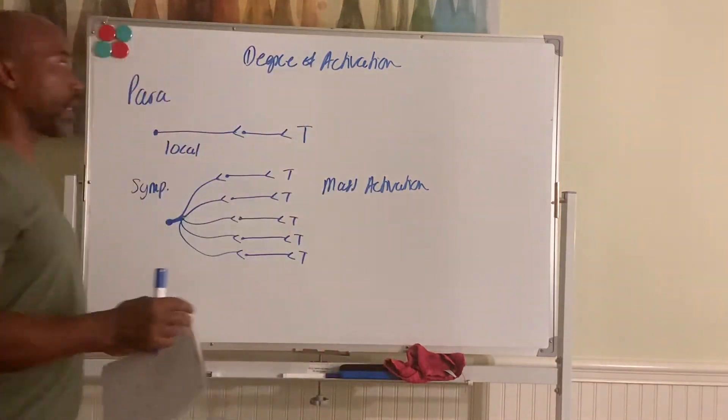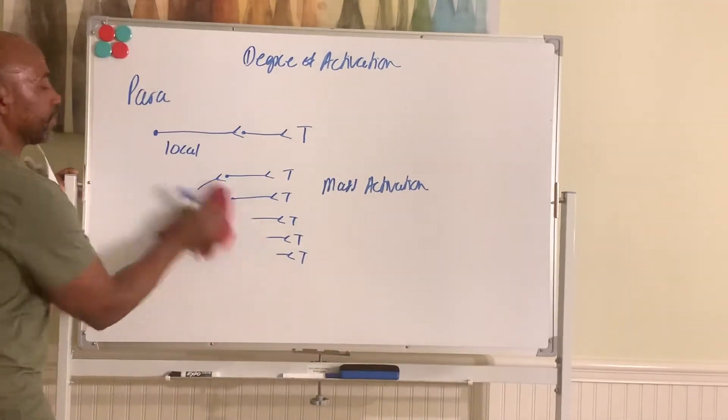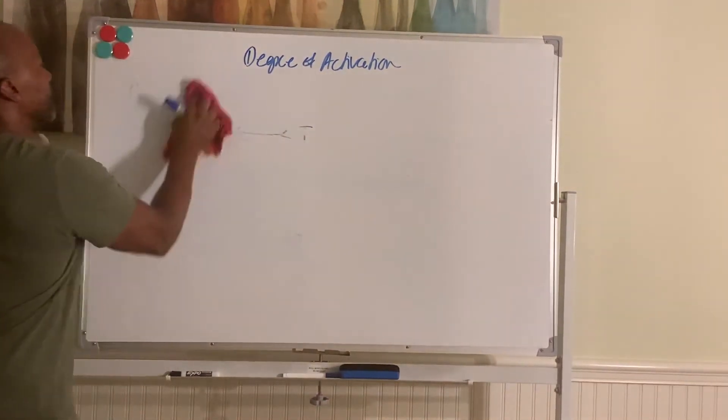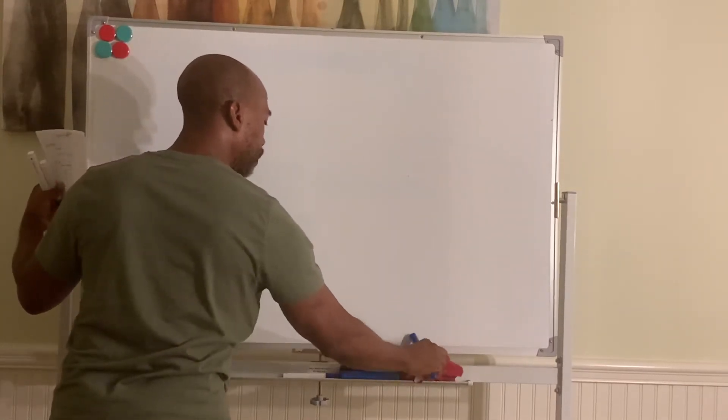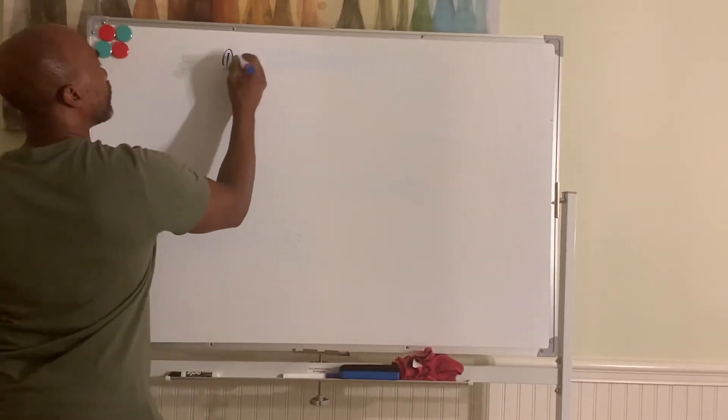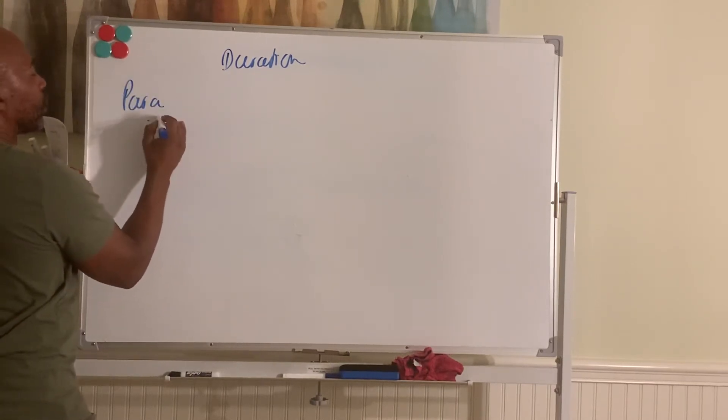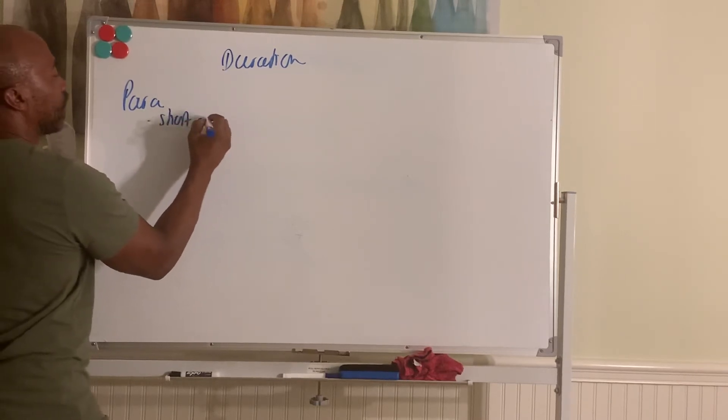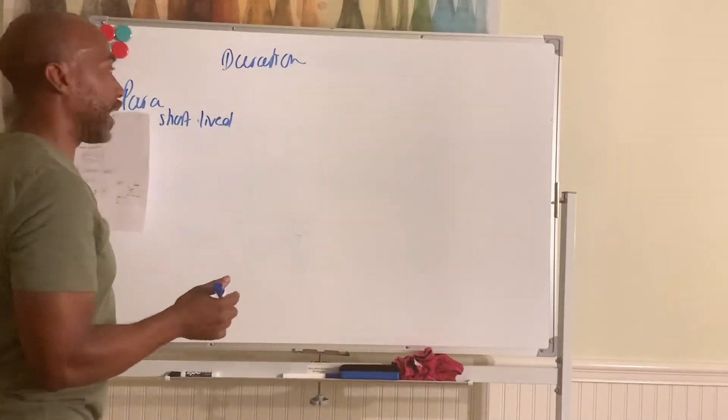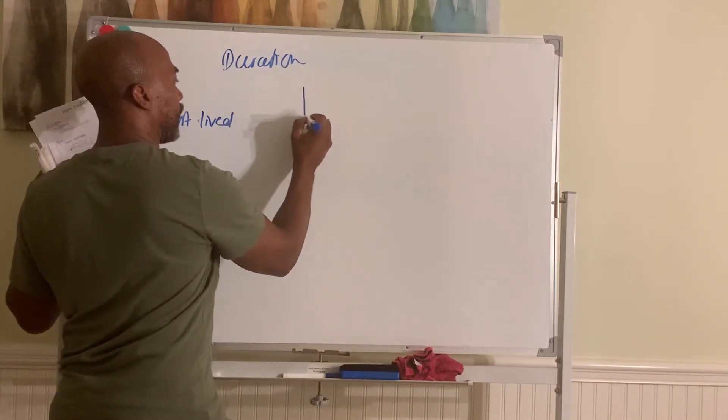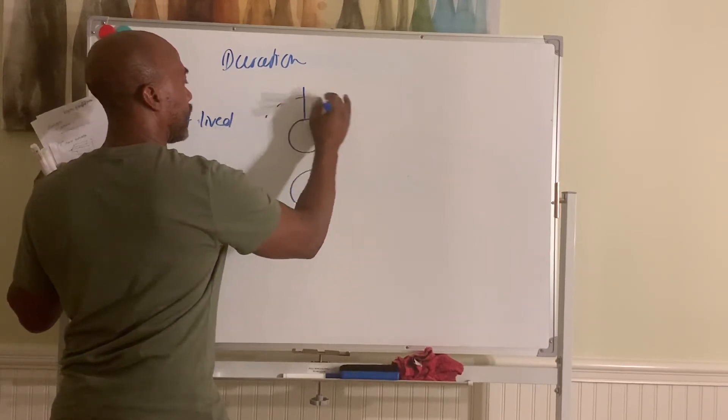Okay. Now in terms of, let's look at something else. Let's look at how long the effects last for. So the duration of the effects. Back to the para. Now the para division, short lived. The effects are not prolonged. Short lived effects. And the reason why is that, this is true, especially in the ganglia. In the ganglia. Right. This is the ganglia. The autonomic ganglia.